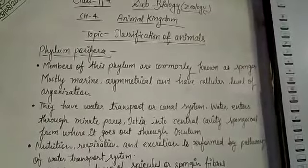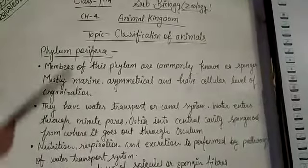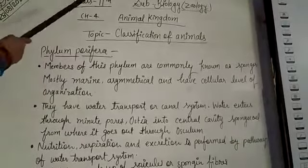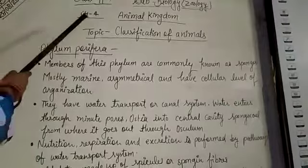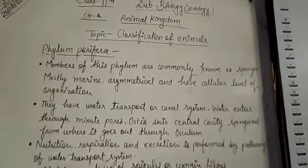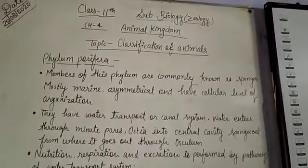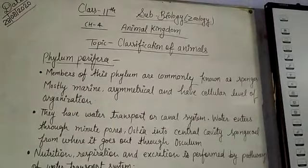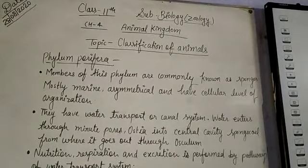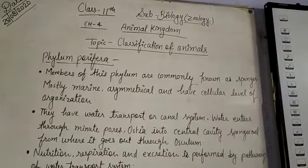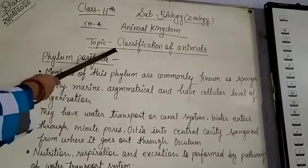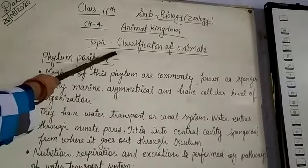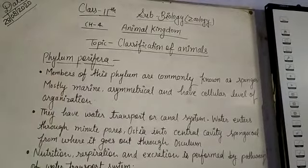Good morning students. Class 11, subject Biology, Chapter 4, Animal Kingdom. In the previous video, I explained the classification of animals via a flow chart.